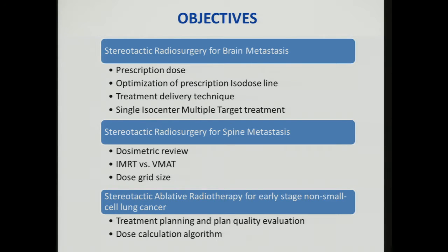The objective today for the brain is mainly focused on brain mets. We will talk about prescription dose, optimization of prescription isodose line, and treatment delivery technique. It's getting very popular — single iso multi-target treatment. For the spine, we focus on spine mets, go over the dosimetric review and compare IMRT versus VMAT, and talk specifically about dose grid sizes used for spine radiosurgery.